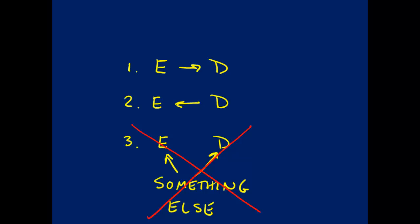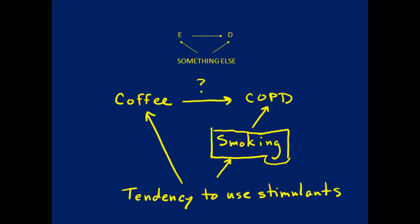Once we've minimized confounding, we're left with only the first two causal structures: either the exposure has a causal effect on the outcome, or reverse causality — the outcome causes the exposure. Sometimes we can eliminate reverse causality through study design, by ensuring exposure preceded outcome. With cross-sectional data like the NHANES data, we are less certain about reverse causality than if we had first collected exposure data and then waited for the outcome.